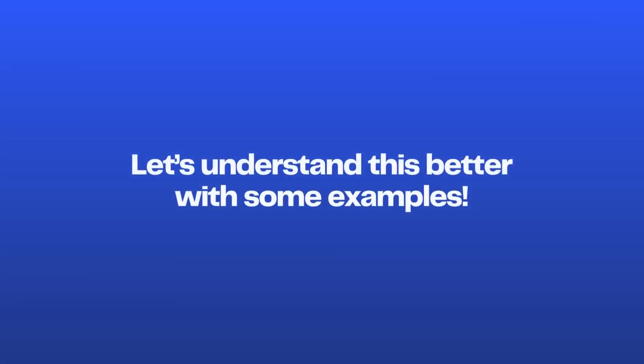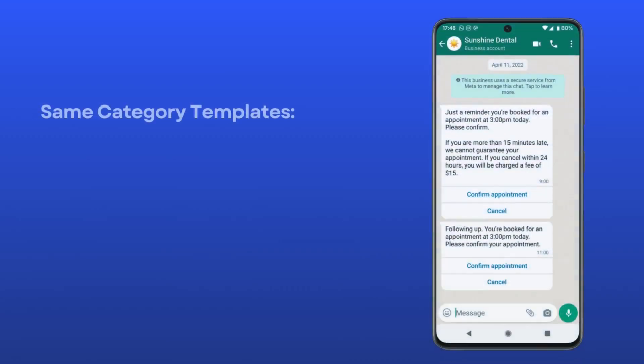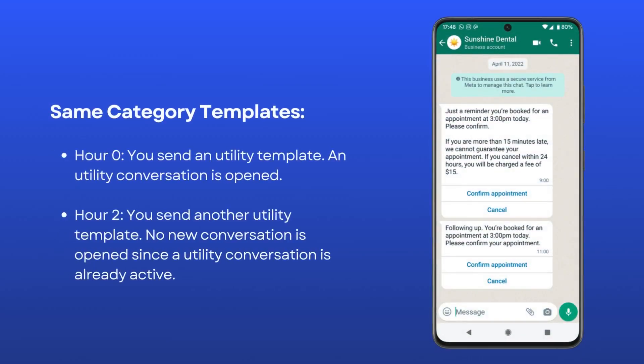Let's understand this better with some examples. Same category templates: if you send a utility template, a utility conversation starts. Sending another utility template later within 24 hours of the first message won't open a new conversation, since the utility conversation pricing is already active.